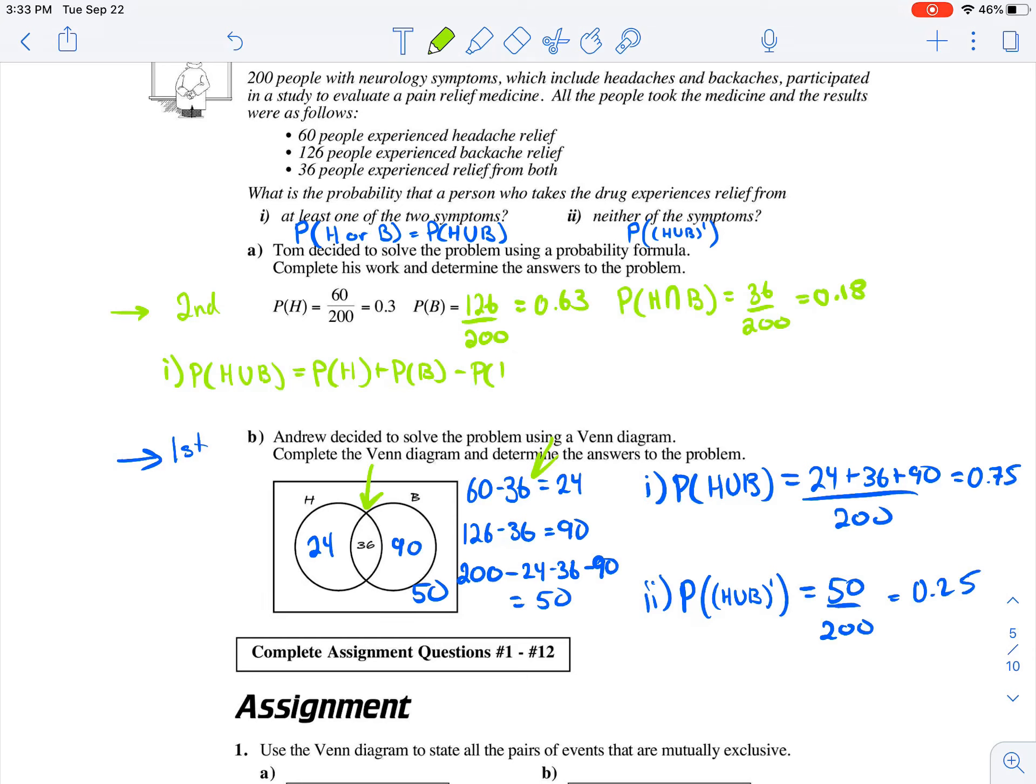We are subtracting out duplicates. So we'll subtract out the probability of someone experiencing headache and backache relief. So 0.3 plus 0.63 minus 0.18, which gives us 0.75, the same as before.